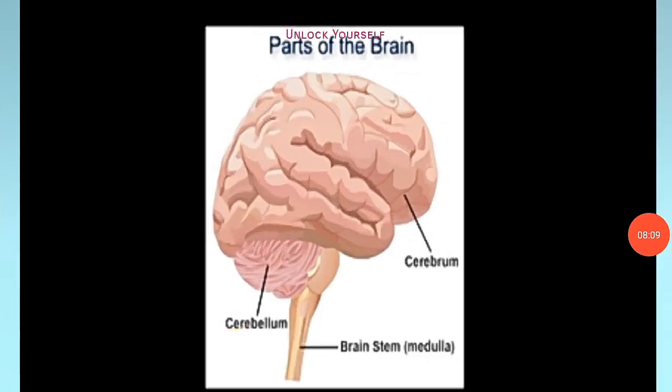Coming to the other major parts of the brain — the cerebellum, also known as the little brain. This cauliflower-like structure is to the rear of the brain system. With connections to the motor cortex through the cerebellar tract, it controls fine motor movement, timing, motor memory, planning of movements, and balance.